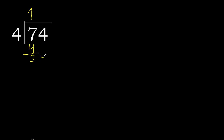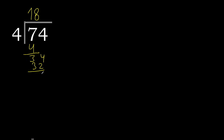Bring down: 34. 4 multiplied by 9 is 36 — 36 is greater. 4 multiplied by 8 is 32. Subtract: remainder 2. Bring down next digit.